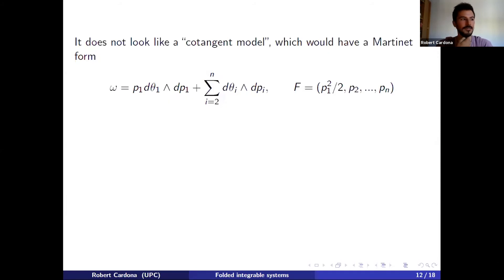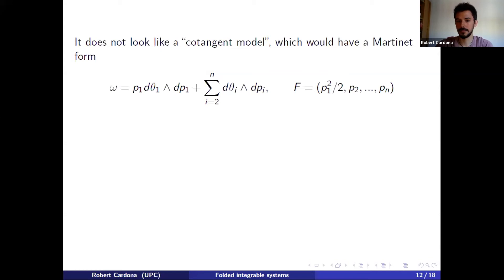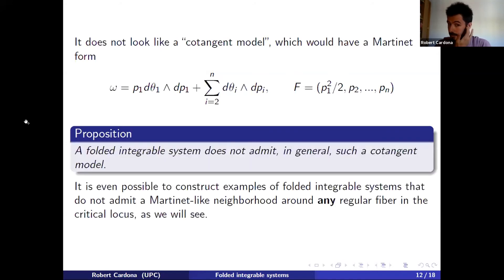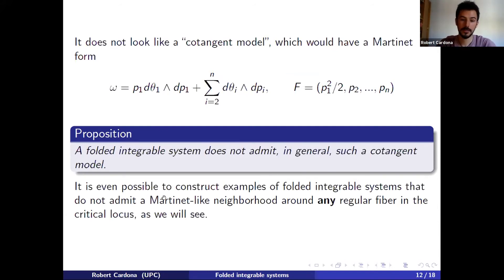One might say this is not good enough because it does not look like a cotangent model. When we first started working on this, we expected to obtain a Martinet-like or Darboux-like form where the first function is singular and the others are not. But this is not achievable in general. In fact, we can construct examples of folded integrable systems where, for any regular fiber you pick, no such nice normal form exists.